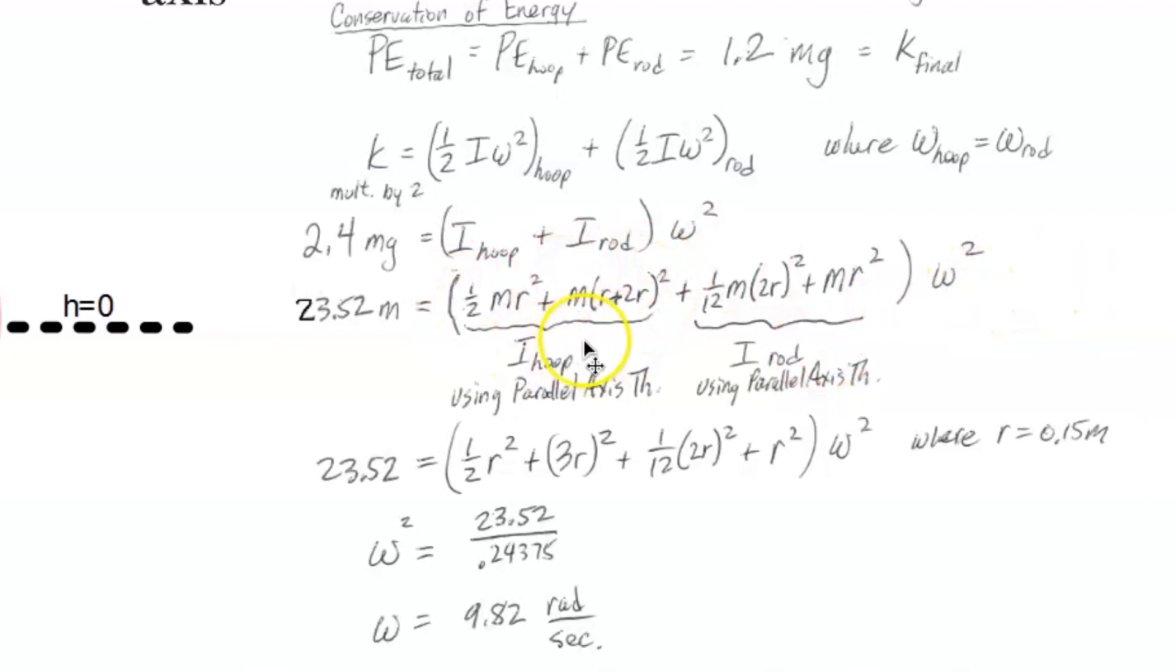So there are my expressions using the parallel axis theorem for the moment of inertia for the hoop and the rod. I'm going to divide m out of the equation, plug in my value for r, and solve. And I see that my value for the angular velocity of the rod in the hoop as it swings through the bottom is 9.82 radians per second.